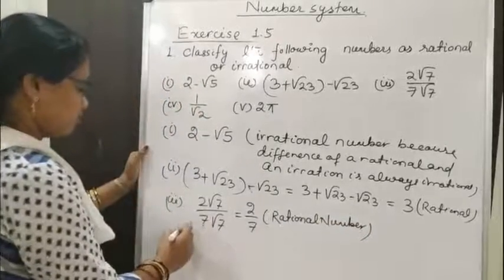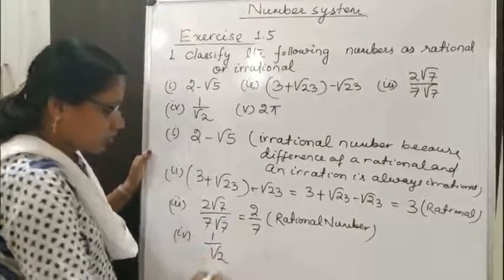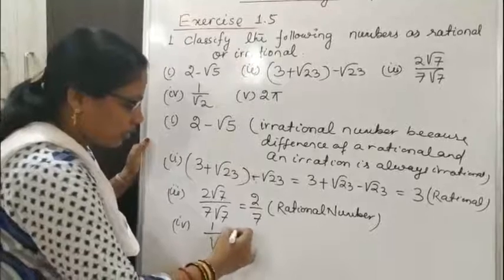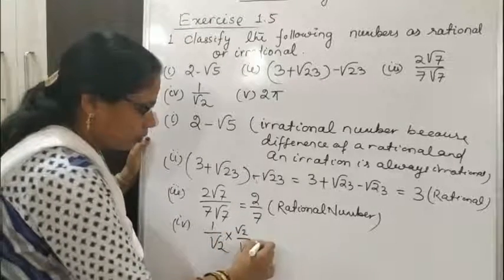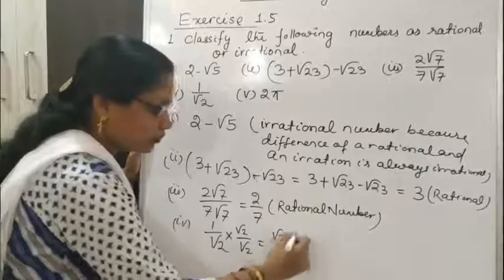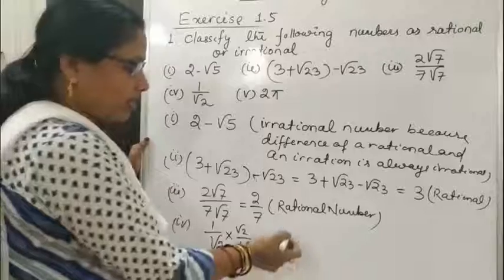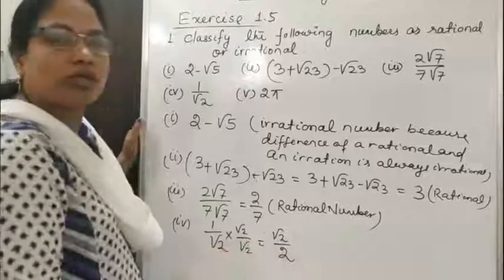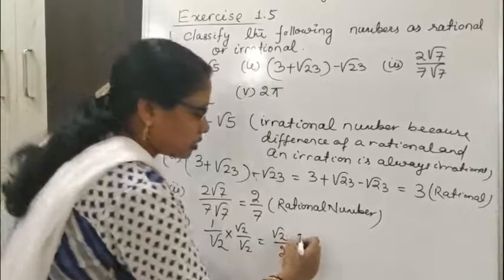Bit 4: 1 by √2. If we rationalize the denominator, this will become √2 by 2. The quotient obtained when we divide an irrational number by a rational number will be an irrational number. So this is irrational.